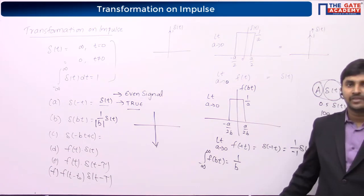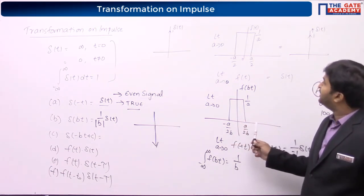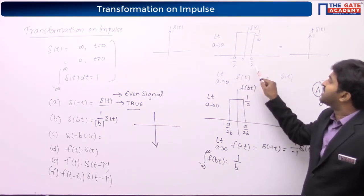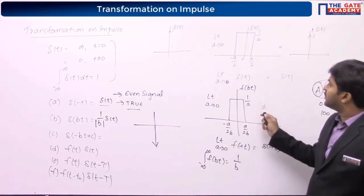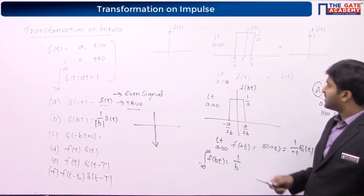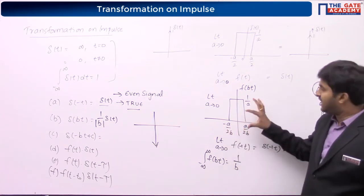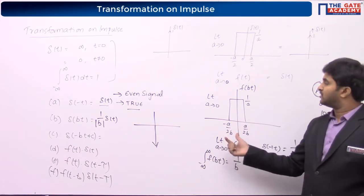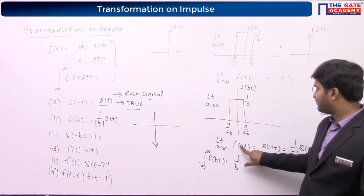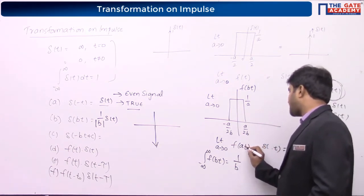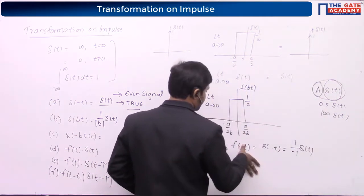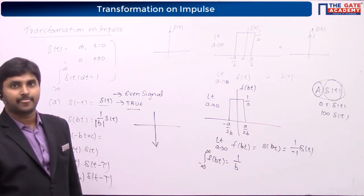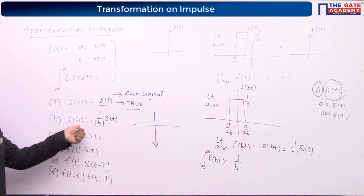For f(bt): once you get f(t), do the time scaling by dividing the time axis by b. The area of f(bt) is length (1/a) multiplied by breadth (a/b), giving 1/b. So the result is (1/b)·del(t), confirming del(bt) = (1/|b|)·del(t) where b is the scaling parameter.